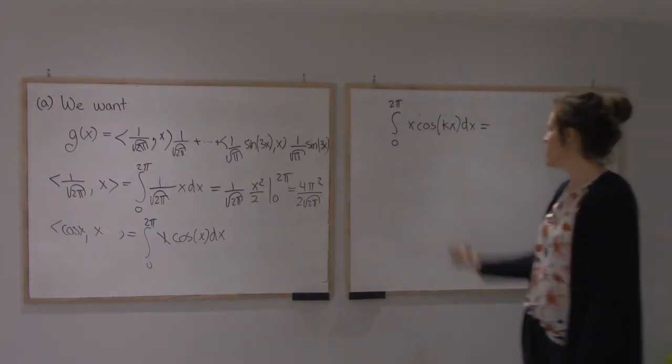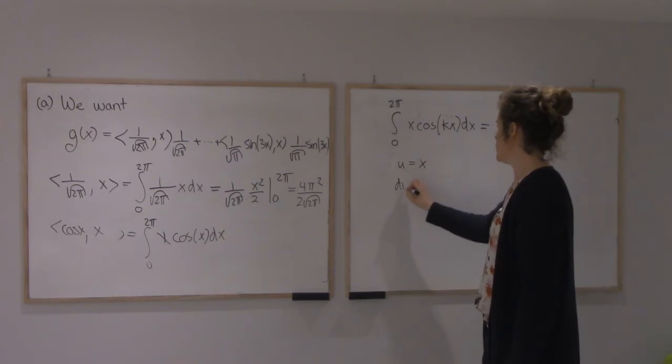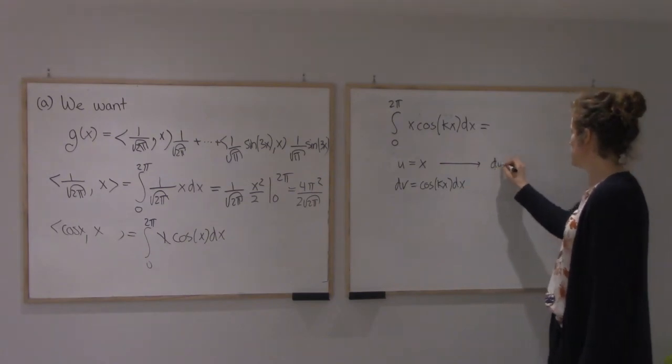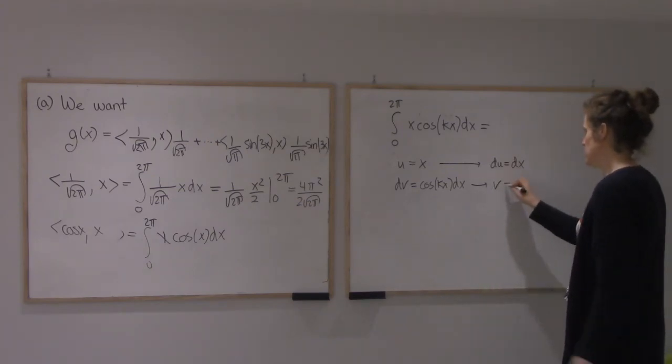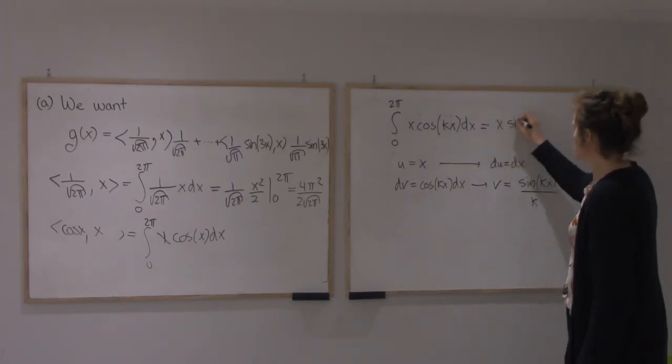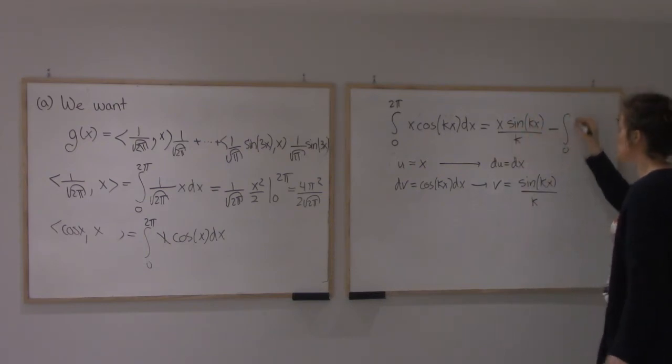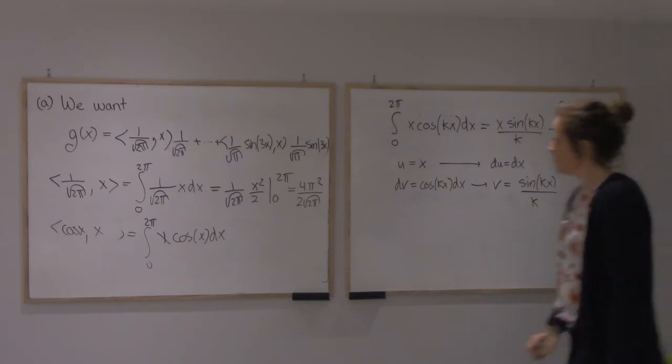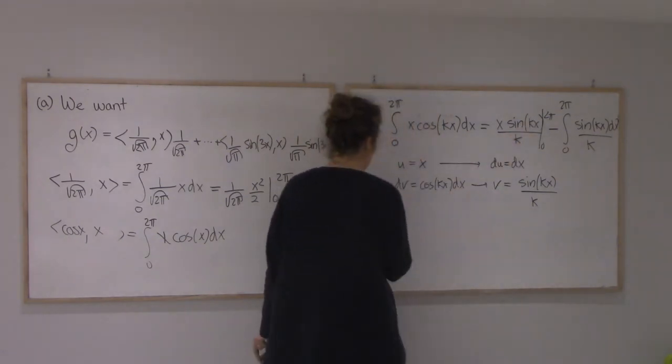So let's say the integral from 0 to 2π of x cos kx dx. This is integration by parts. I'm going to start with u equals x, dv equals cos kx dx. I'm going to get du equals dx. This is going to give me sin kx over k. So I'll get x sin kx over k minus the integral from 0 to 2π.